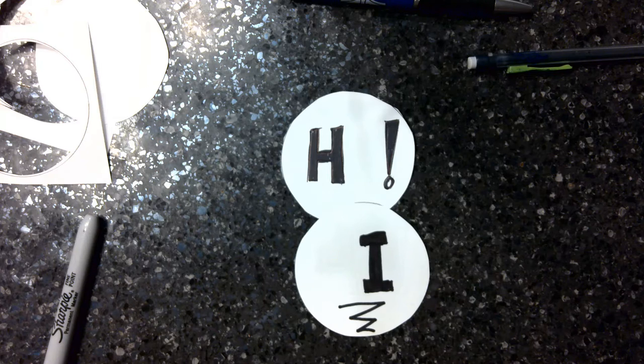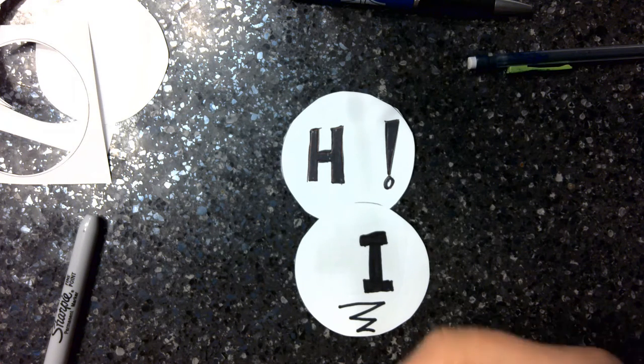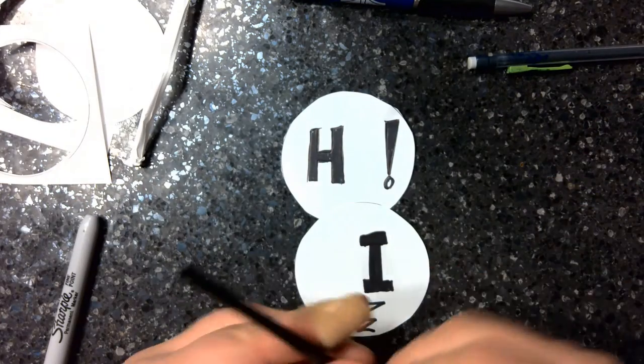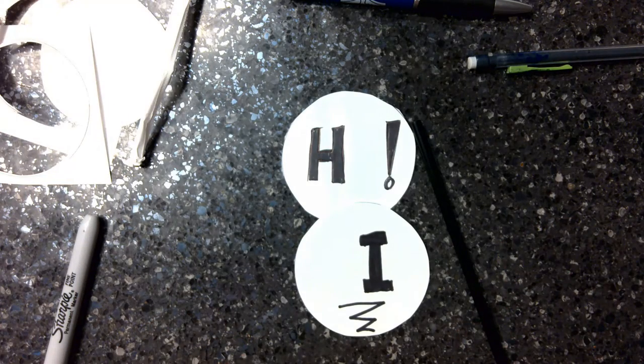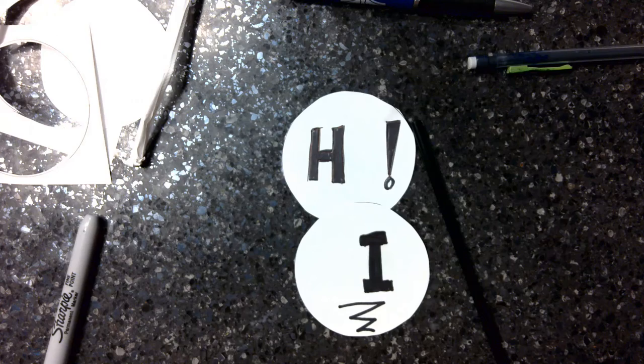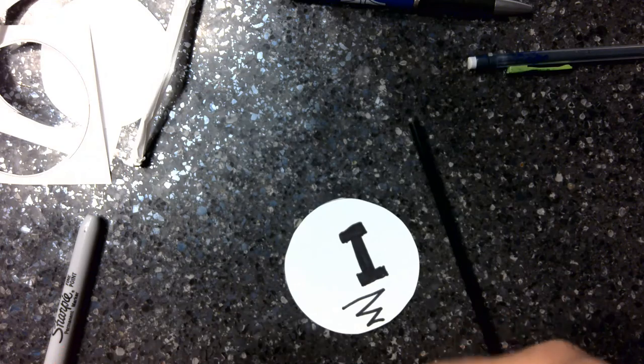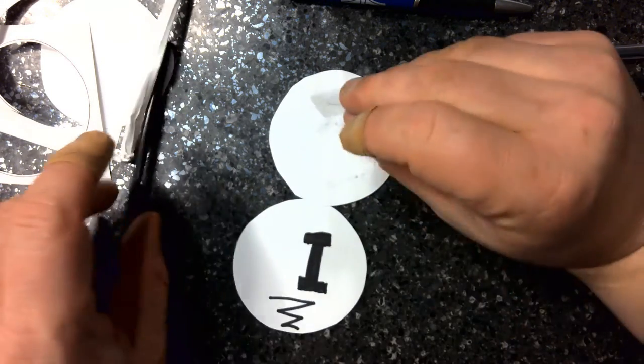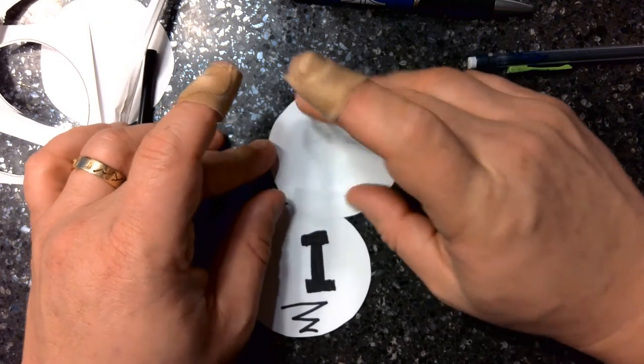To complete your Thaumatrope, take your stick or in our case a straw and affix the first piece of your Thaumatrope to it. This may be best done by applying the glue to the center of your first circle.